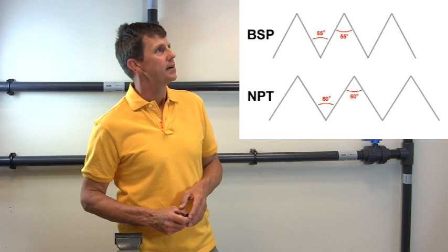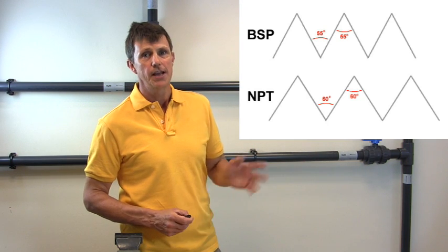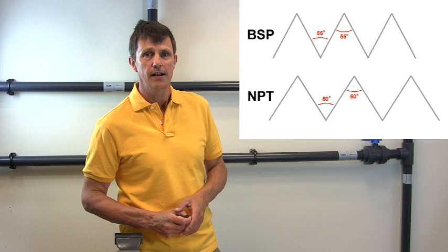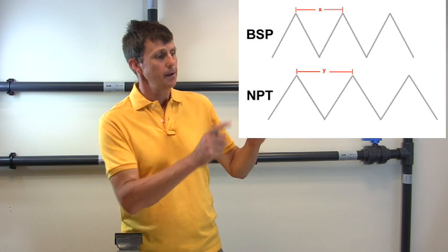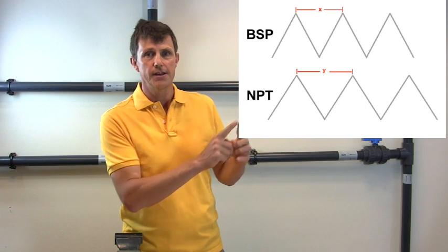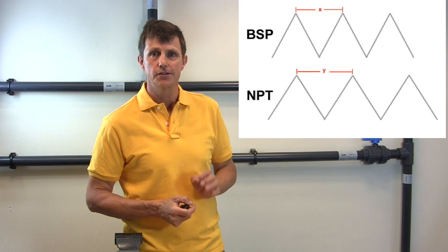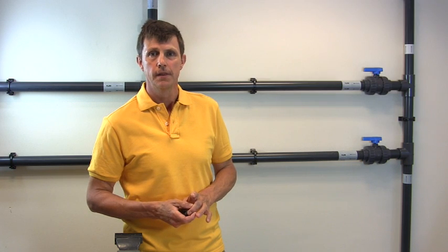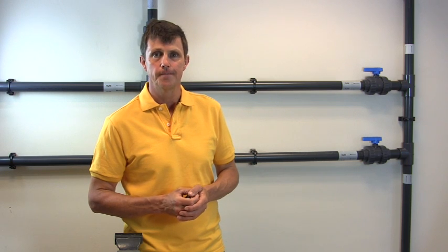BSP threads are cut at an angle of 55 degrees, whereas NPT threads are cut at an angle of 60 degrees. Another crucial difference between them is that the distance between the peaks on the threads — called the pitch of the thread — is different between BSP and NPT. So as you can see, these two different types of threads really aren't compatible with each other.